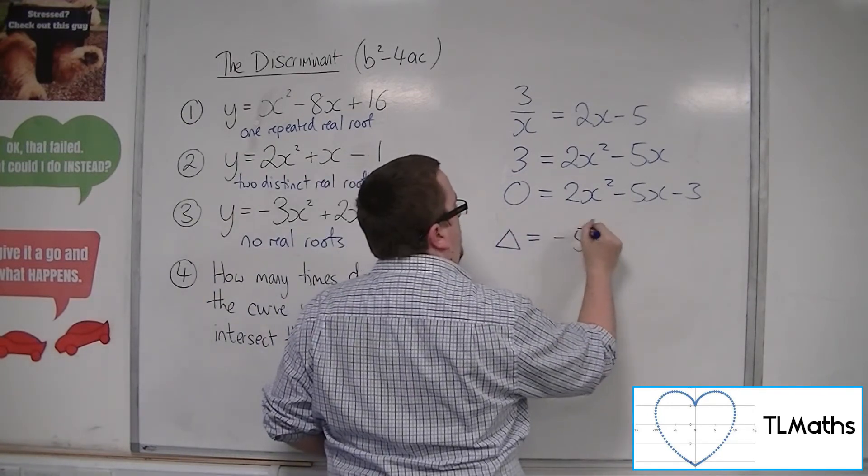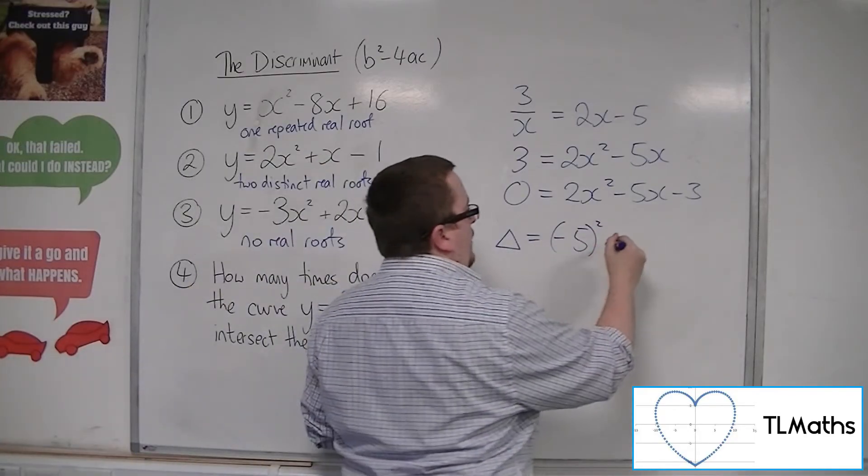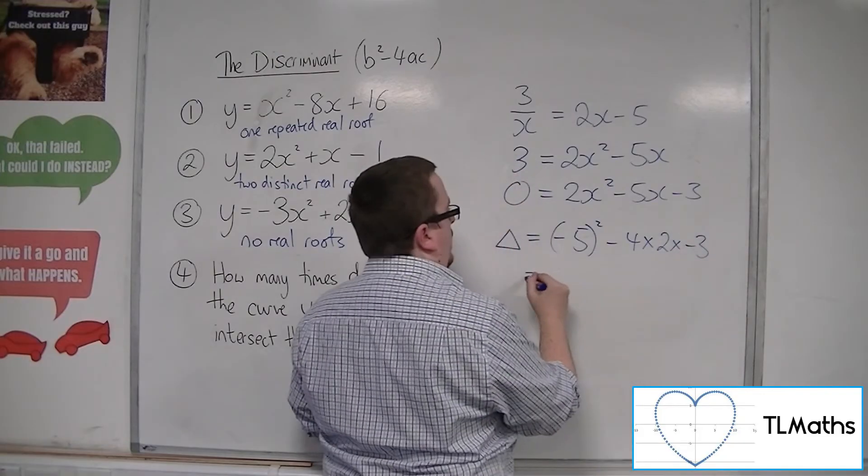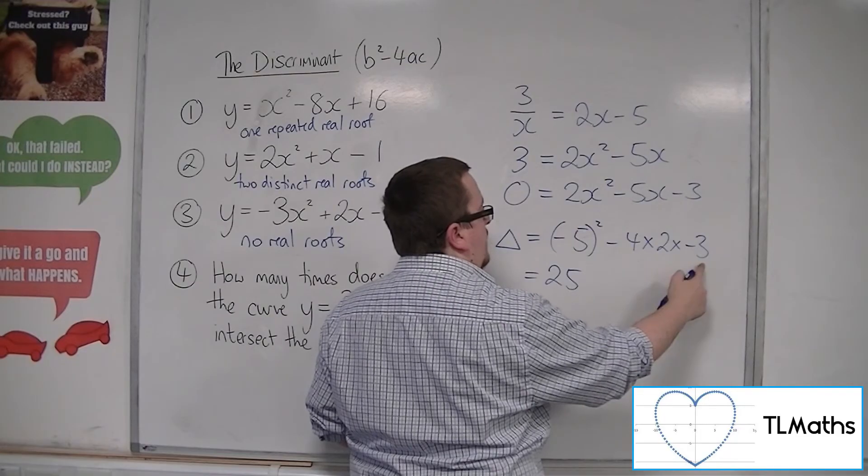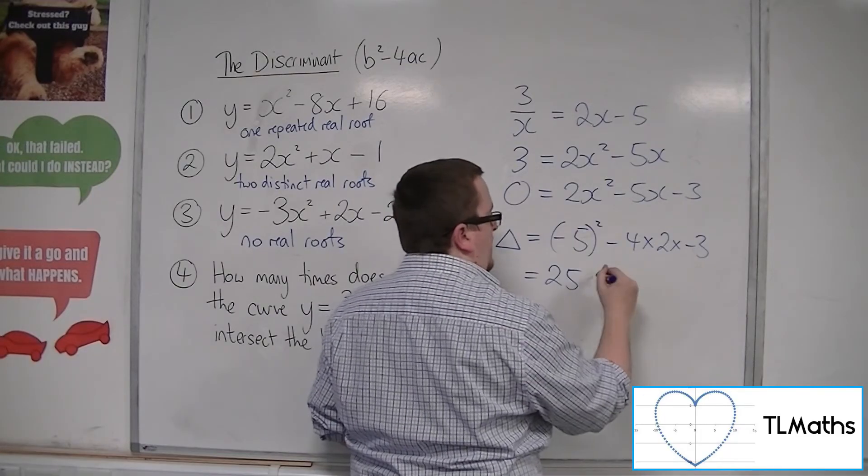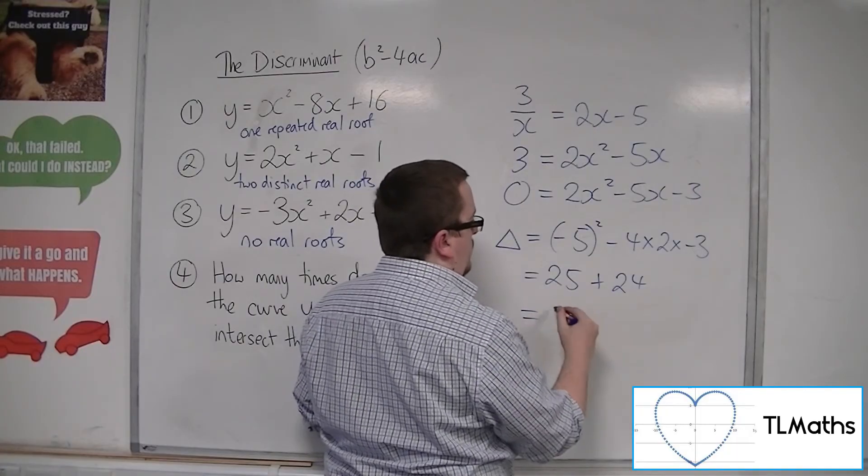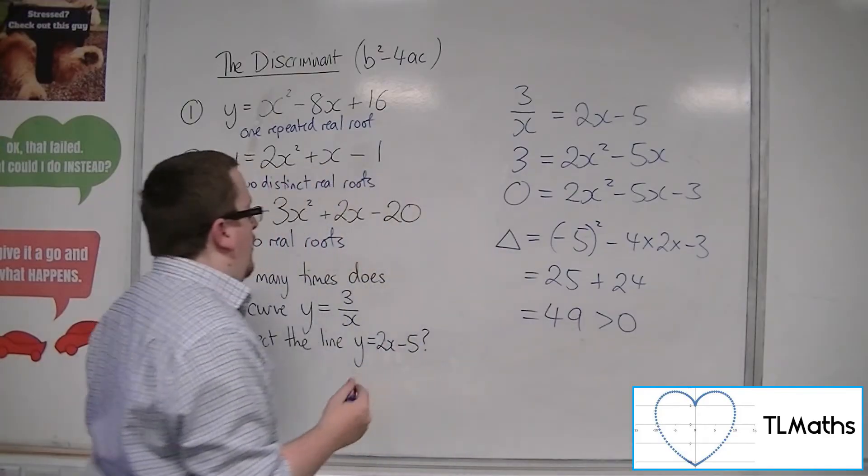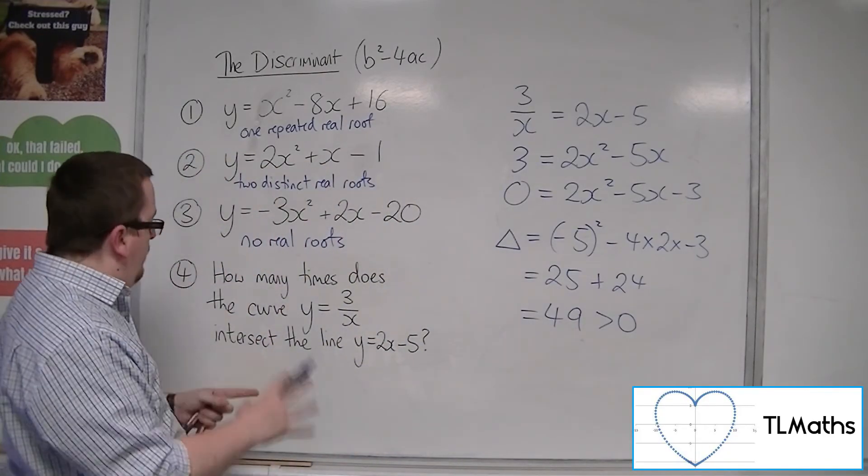So that's b squared minus 4 times a times c. So 25 minus 4 times 2 is minus 8, times by minus 3 is plus 24. So 25 plus 24 is 49, which is greater than 0. So because it's greater than 0, there are two distinct real roots.